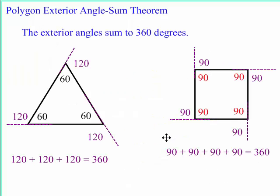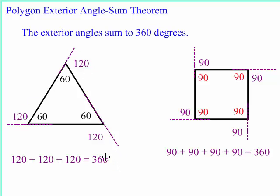The exterior angles on any polygon sum to 360 degrees. An exterior angle is formed by extending a side of the figure outward. Since it forms a linear pair with the interior angle, they add up to 180. So if the interior angle is 60, the exterior angle is 120. For a triangle with three 60-degree interior angles, the exterior angles are 120 each — and 120 plus 120 plus 120 equals 360.